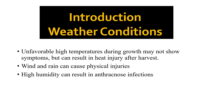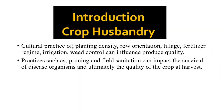Crop husbandry. Crop husbandry factors such as planting density and row orientation are important in that equipment and manual laborers will have to operate within rows, and therefore adequate spacing must be left.